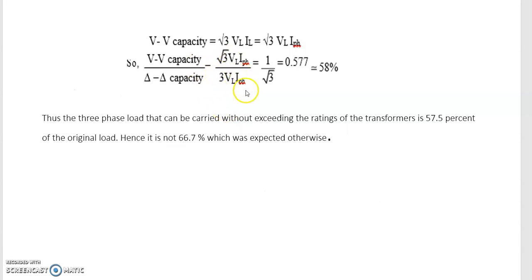Putting the value in this equation, you will get one by root three, that is 0.577, you can say 57.7 percent or approximately 58 percent.